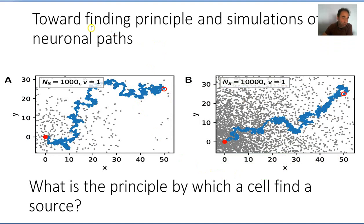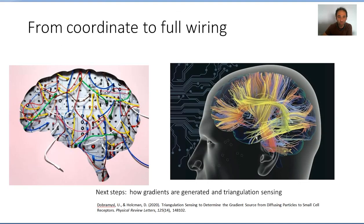We have been interested for many years in finding the principle and making simulation of neuronal paths. You have here an example where we started a simulation somewhere where we have a given expression for the gradient. This is in collaboration with Ulrich Schwarz from Oxford and Cambridge. If you increase the expression, you see that suddenly the path is more direct. We are still very much interested and this is ongoing work to find some principles by which a cell finds a source and knows where it is actually located inside the tissue.